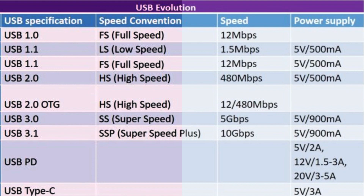Then USB 2.0 was released in 2000, offering a substantial increase in speed. It's called high-speed USB and it's still used quite a bit today. USB 2.0 has a maximum data rate of 480 megabits per second. This transfer rate is much faster than the 1.1 version and helped USB gain popularity as a connection interface for external devices.